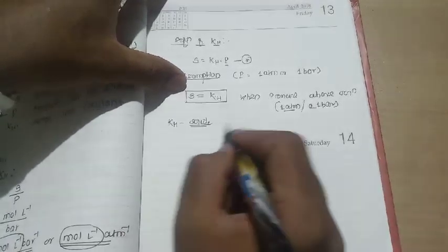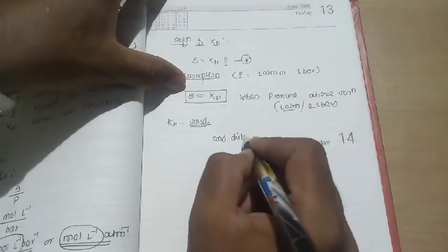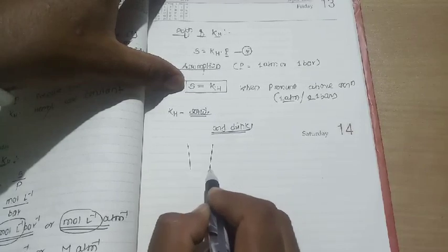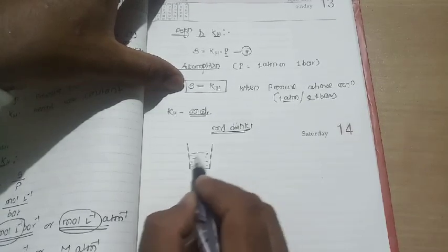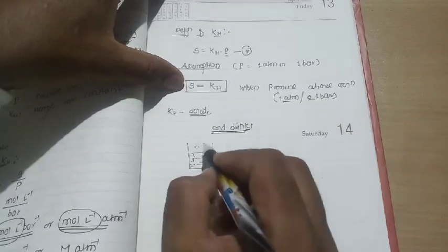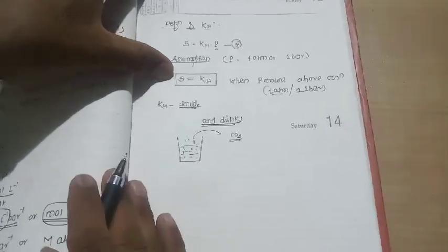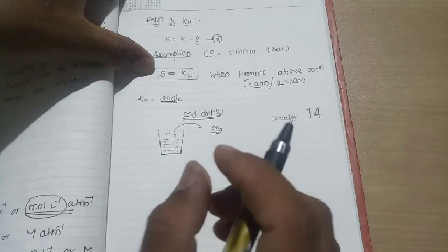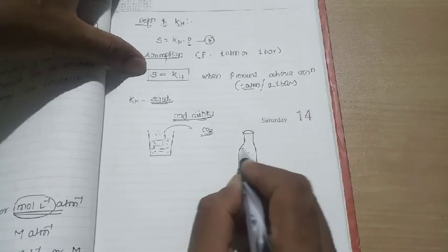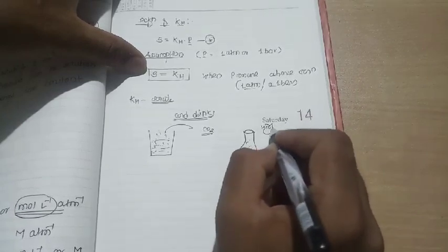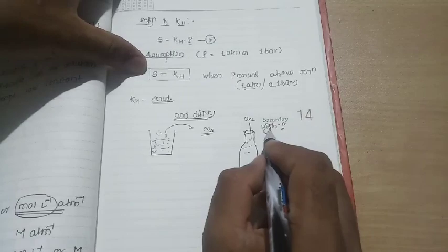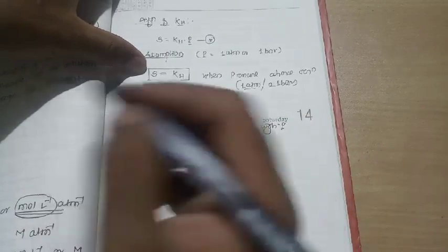A practical example of Henry's Law is cold drinks — like Pepsi or Coca-Cola. When you open a cold drink bottle, bubbles come out. These bubbles are of carbon dioxide. The bottle is filled under very high pressure — carbon dioxide gas is dissolved in the liquid under high pressure — and then the cap is sealed immediately. This is a direct application of Henry's Law: at high pressure, CO₂ solubility is high.